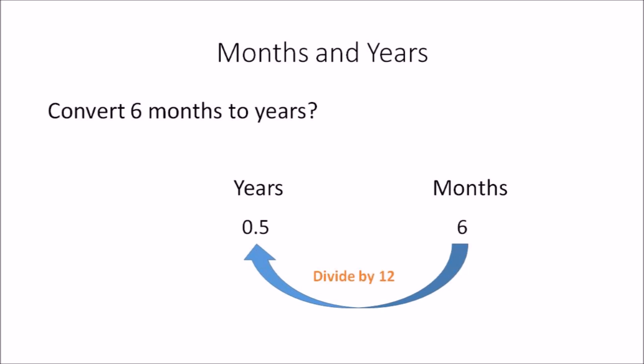In this example, convert 6 months to years. Again you're converting months to years, and all you need to do is divide the amount you have in months by 12. So 6 divided by 12 is equal to 0.5, so the answer is 0.5 years.